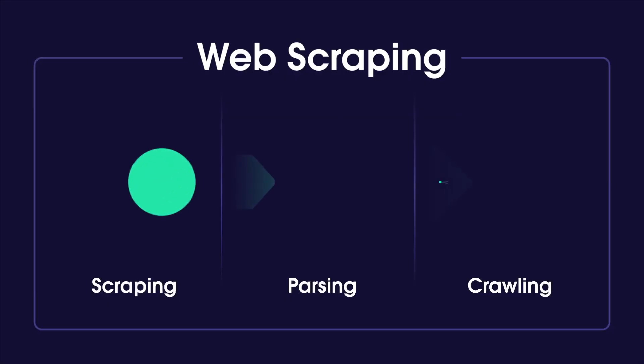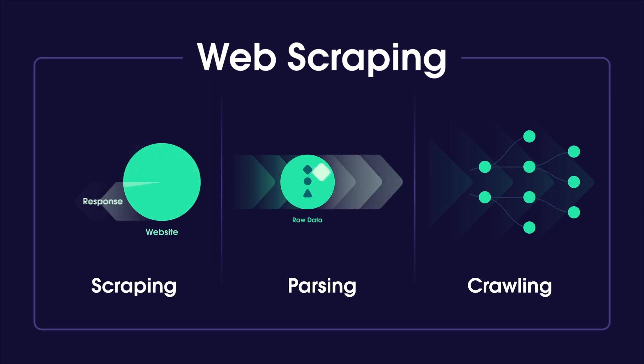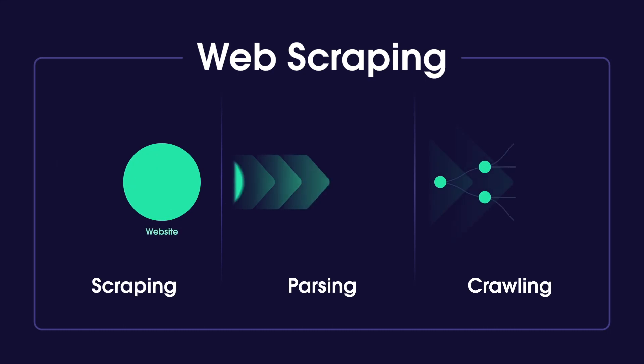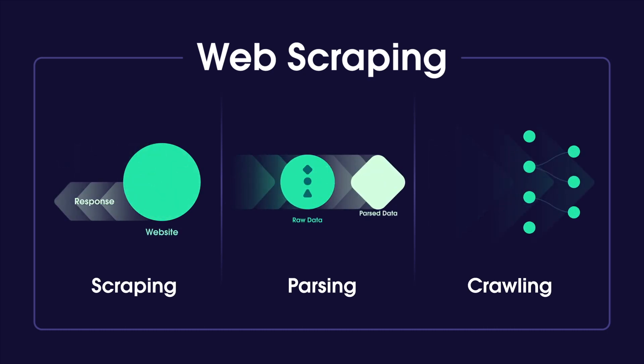Moving on from the legal aspect of web scraping, let's delve deeper into how web scraping works. Simply put, a web scraper sends a request to the website, downloads the page's HTML code and then parses the code to extract the relevant public data. The web scraper can use different techniques to extract information, such as regular expressions, XPath or CSS selectors. Once the public data is gathered, it can be saved in a structured format such as a CSV or JSON file or stored in a database.